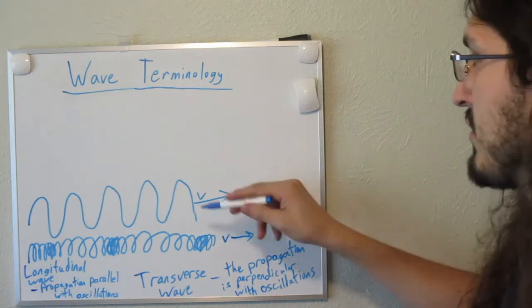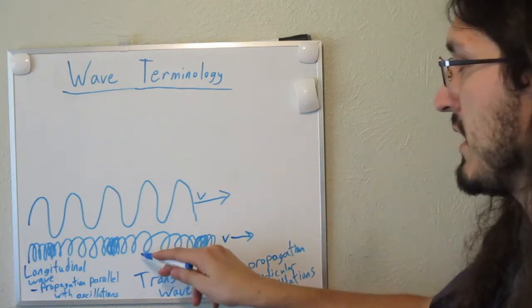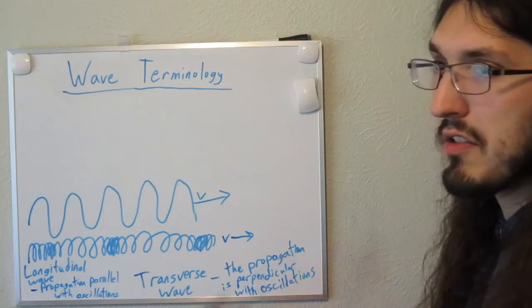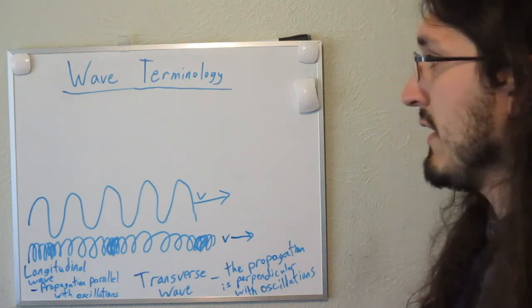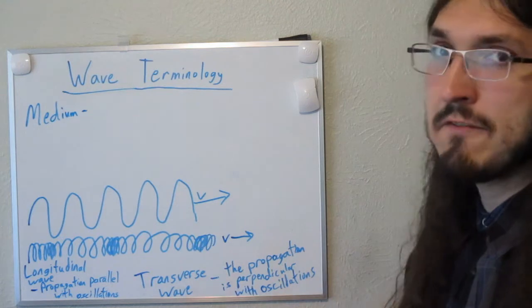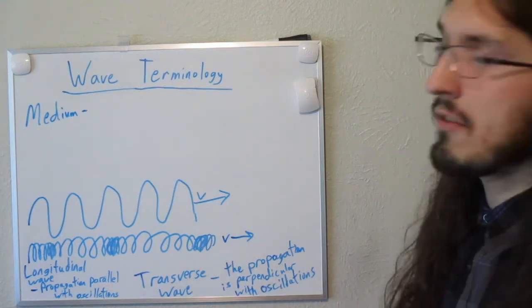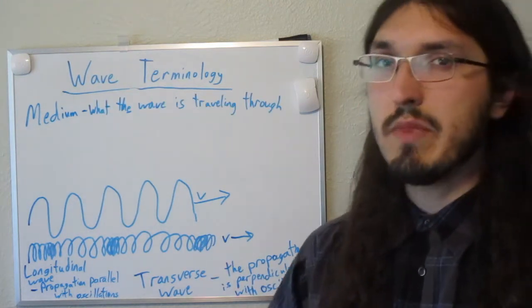Here you can see a comparison of a transverse wave versus a longitudinal wave and how those look differently. Another term we use in discussion of waves is medium. The medium for a wave is what the wave is traveling inside of. Different kinds of waves require different mediums.